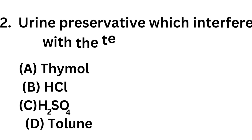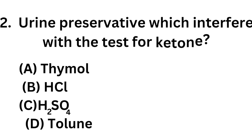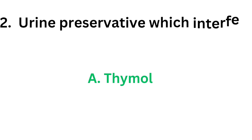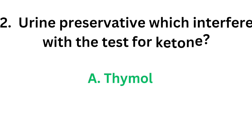Question number 22: Which urine preservative interferes with the test for ketones? Option A: Thymol. Option B: HCl. Option C: Sulfuric acid. Option D: Toluene. The correct answer is Option A: Thymol. Thymol interferes with the test for ketones.